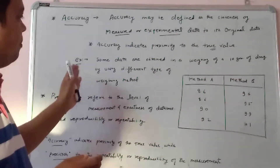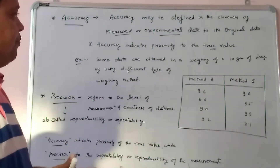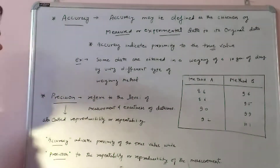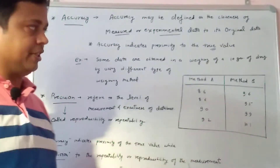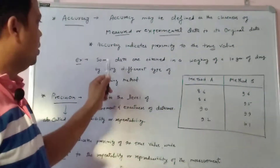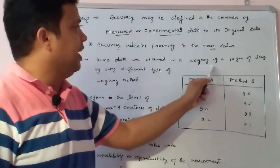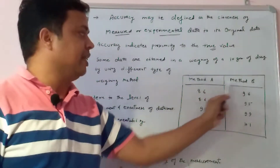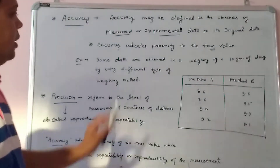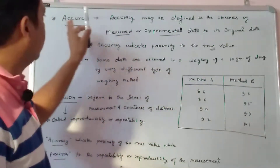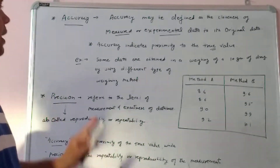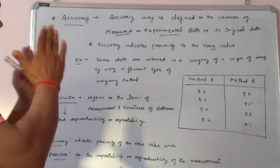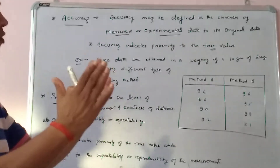We can explain it with a simple example. I have a compound which is 10 grams. I weigh it using two different methods. Some data are obtained by weighing 10 grams of the drug using different types of weighing methods. Accuracy is the closeness of the measured and experimental value from the actual value to the original value.